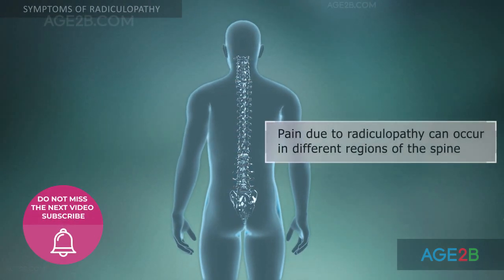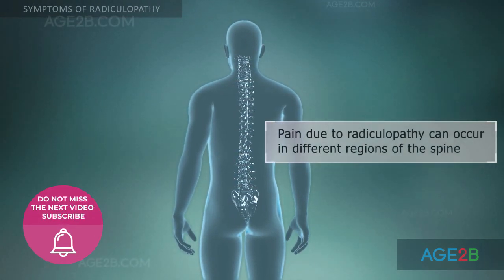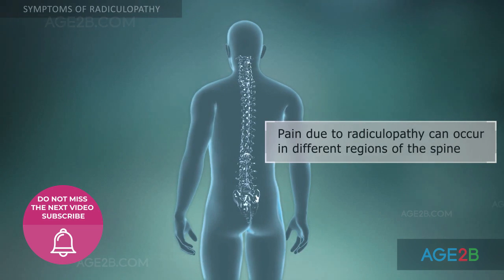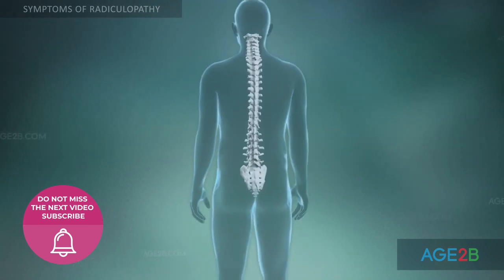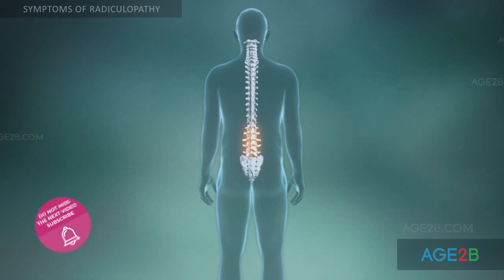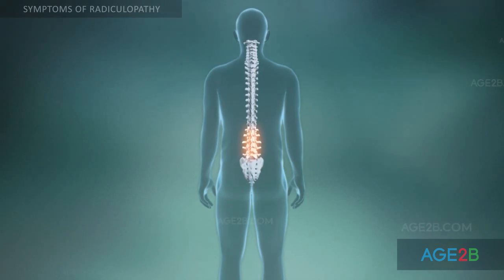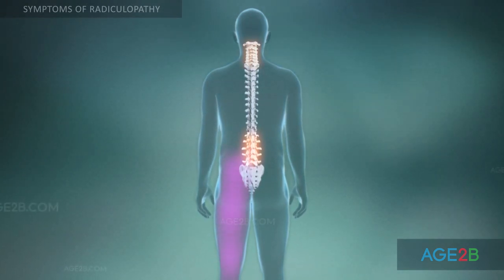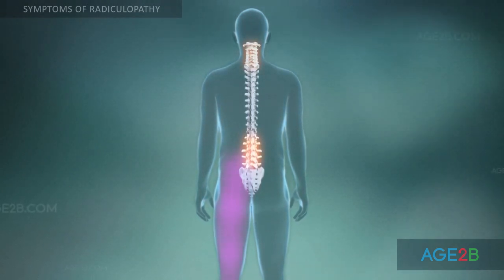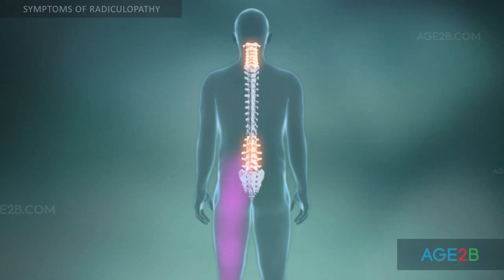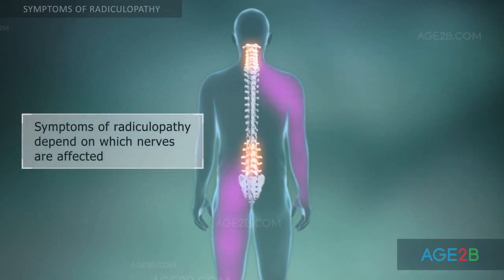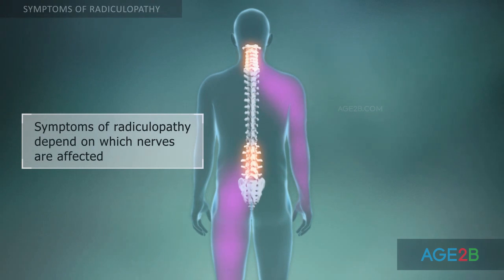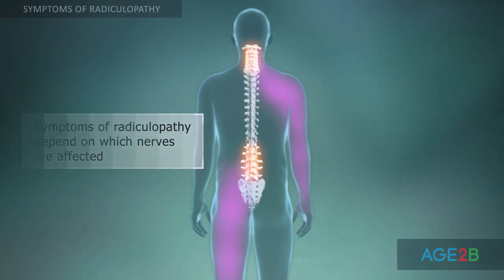The location of the pain depends on various factors. Often, lumbar radiculopathy pain can extend into the legs, and cervical pain due to radiculopathy can radiate into the arms. This depends on which spinal nerves are compressed. The nerves extend into the extremities from the spine.